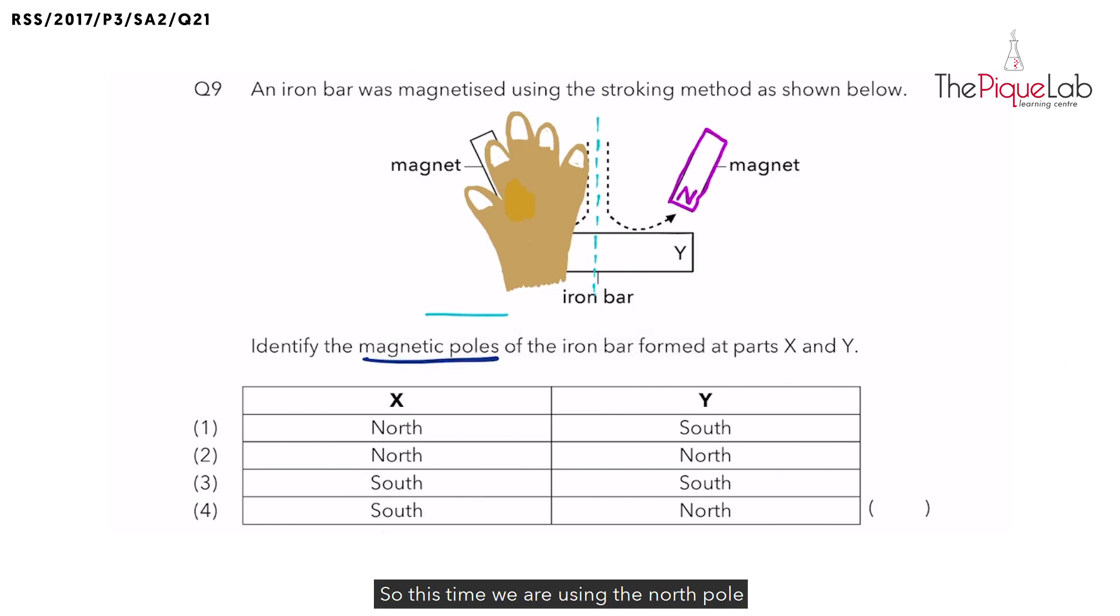So this time, we are using the North Pole to stroke the iron bar in this direction. And where are we stamping first? We are stamping here first. So the North Pole is stamping on this end first.